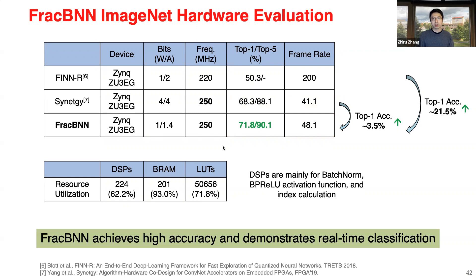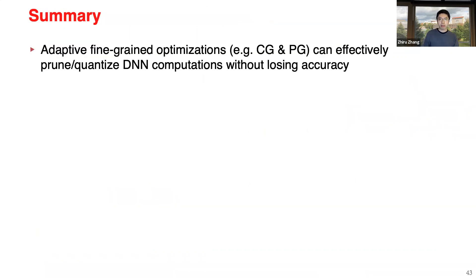We can get close to 50 frames per second on embedded FPGA. There are quite a few optimizations we haven't done yet — if we further fine-tune the HLS code, we can probably get even higher frame rates.